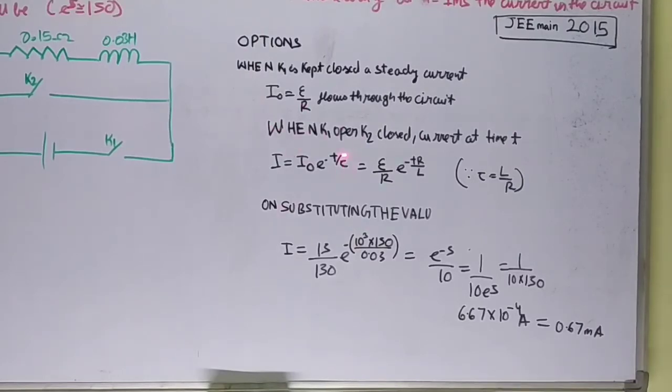When K1 opens and K2 closes, the current at time T is represented as I equals I0 times e to the minus T by tau, where tau equals L by R.